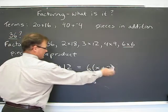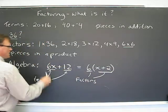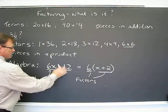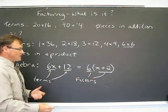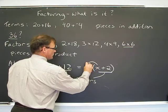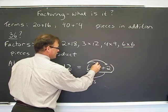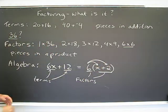6 times x plus 2, product. 6x plus 12, addition. Okay, product of factors, addition of terms. And how do you check this out? Well, using the distributive property, which is the undoing of the GCF, you can multiply it out together and still get the same answer.